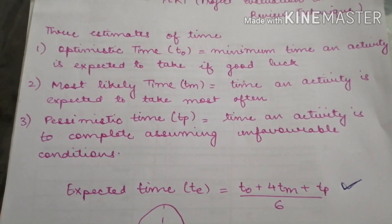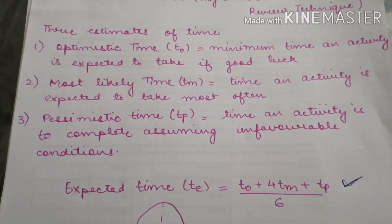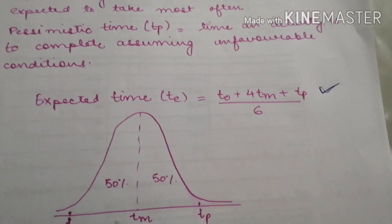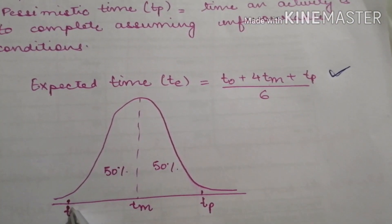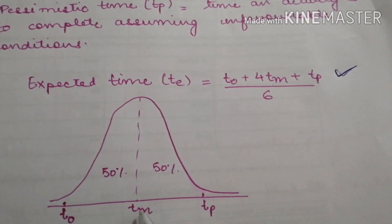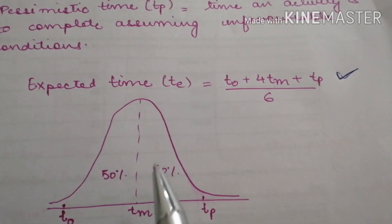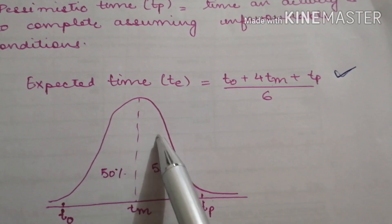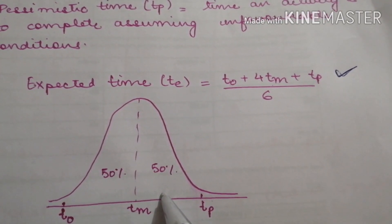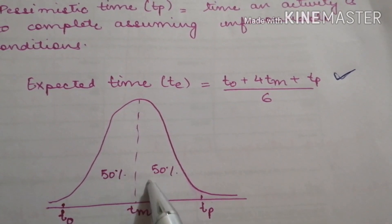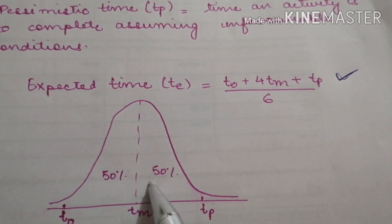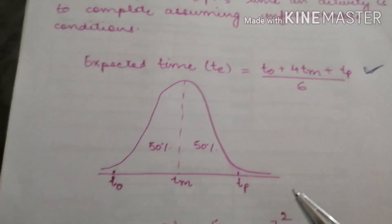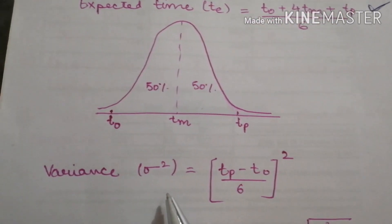When we are dealing with PERT problems, they always follow the normal distribution curve. We have optimistic time on one side, pessimistic time on the other, and most likely time in between. The area falling under the curve on both sides is 50%. We will be considering this when solving problems, and one more thing we will be calculating is the variance.